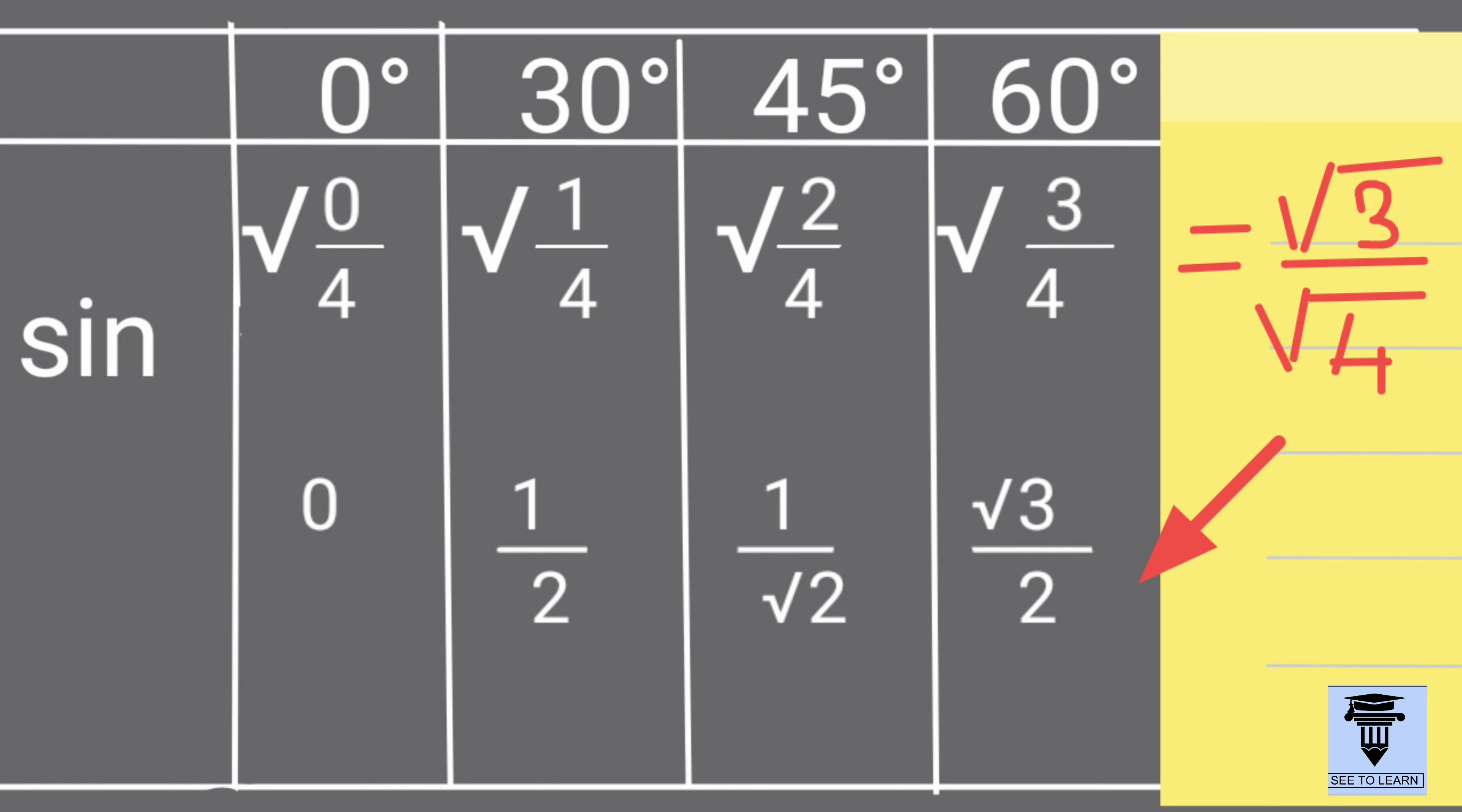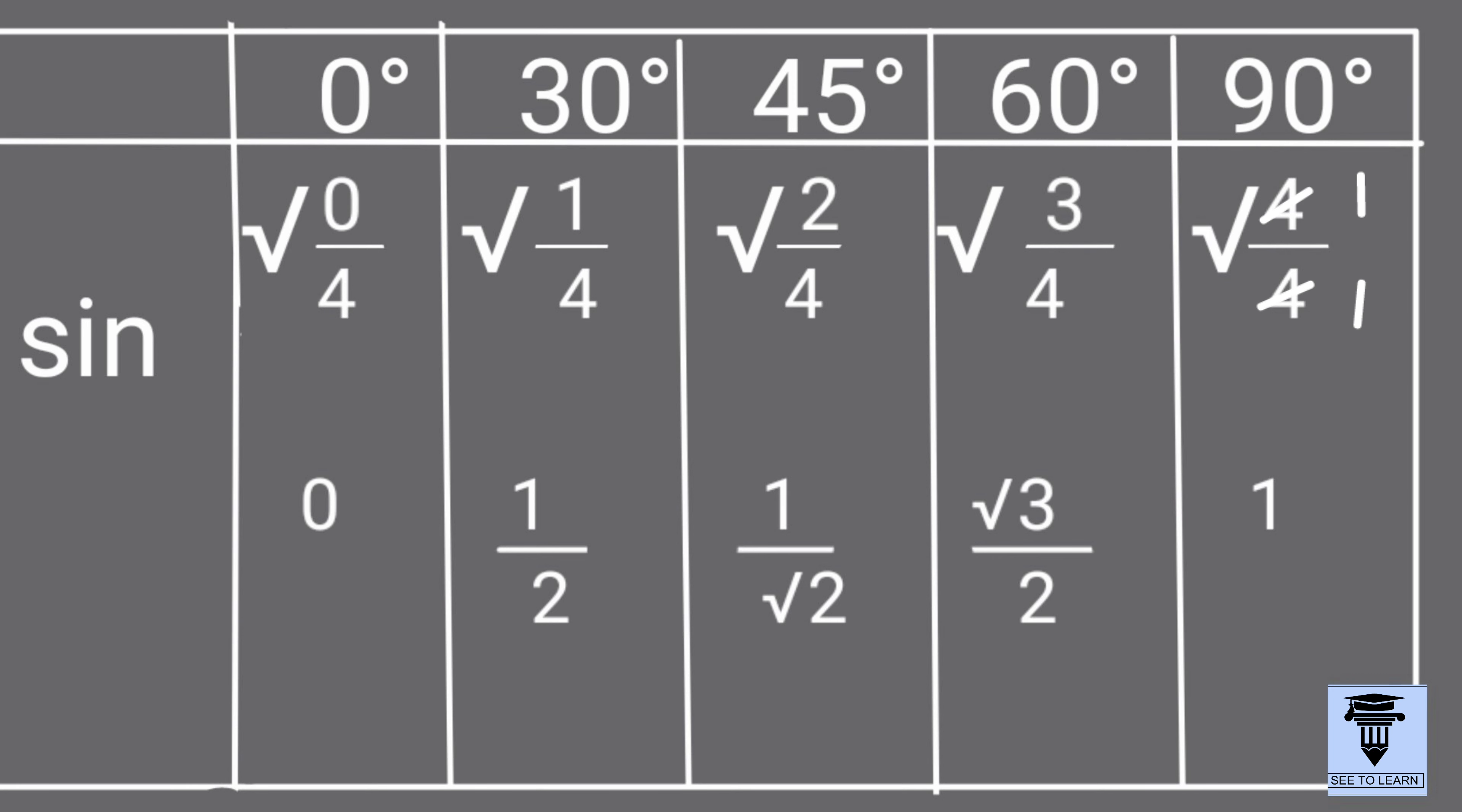Let's come to sin 60. Here we cannot find square root of 3, so we write it as root 3 by 2. Sin 90 degrees is 1.